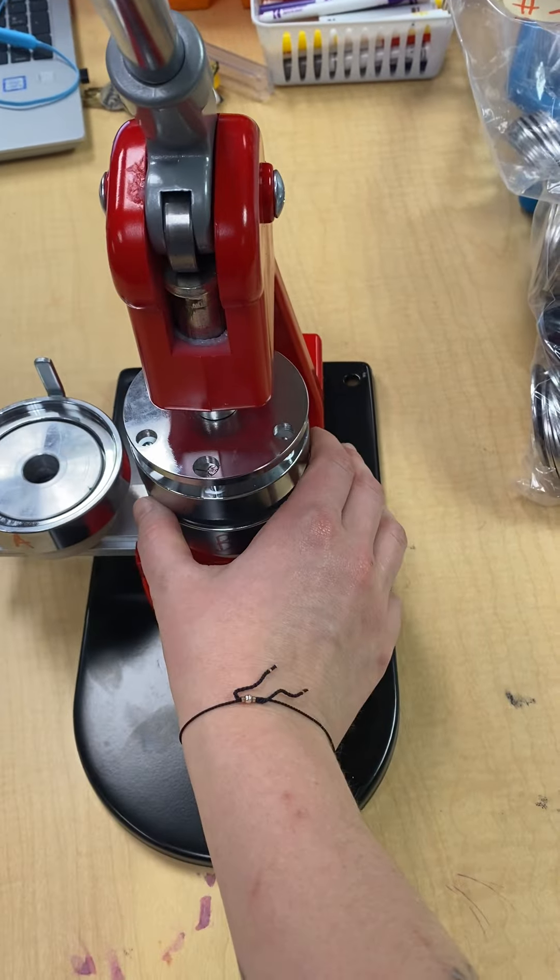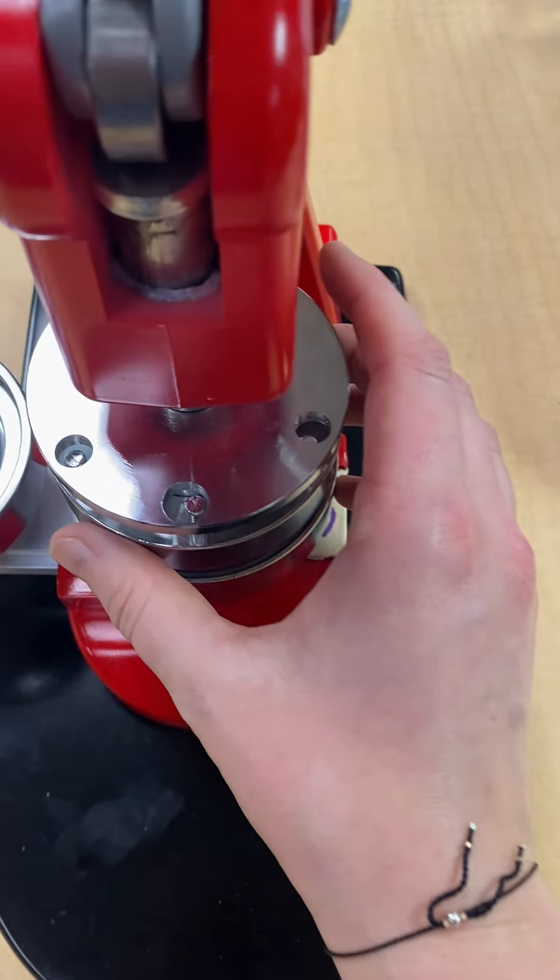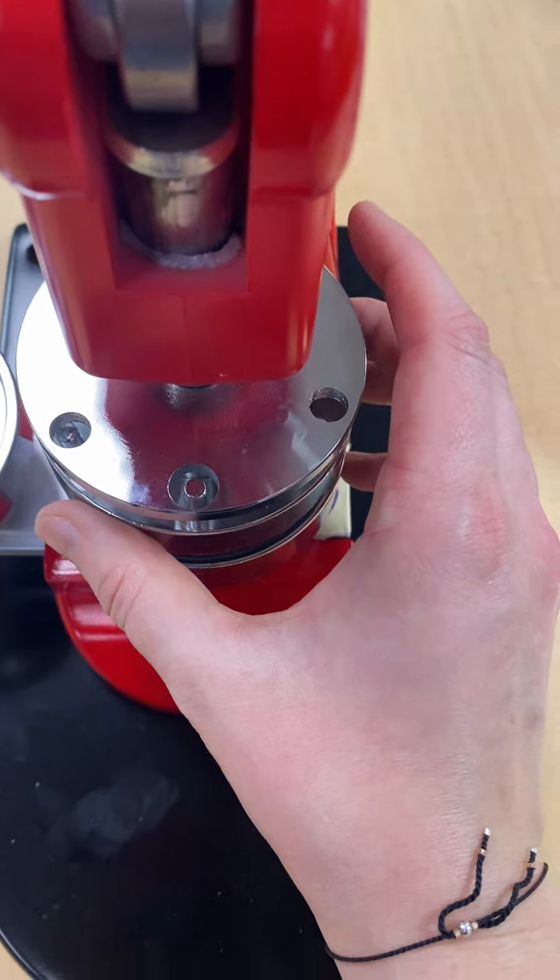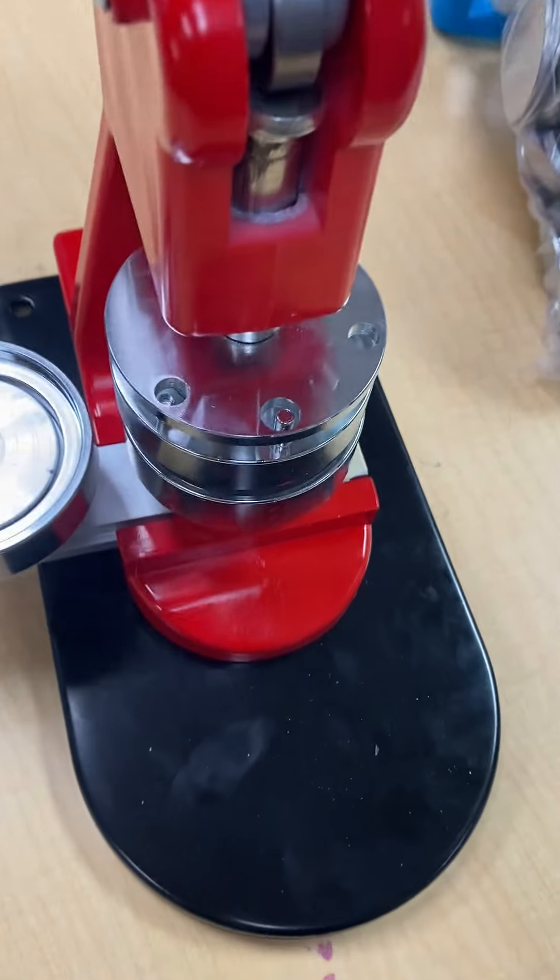And then when you lift up and you slide it over, you will see that the button is no longer there. And that's because it's up in here to attach it to the other side. So then we slide it to where the B side lines up.